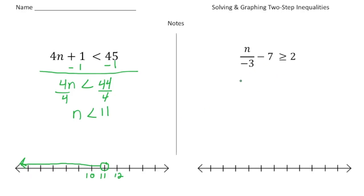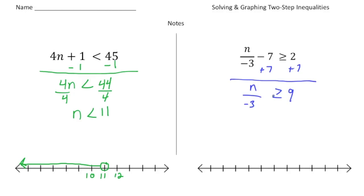Let's try the next one. We have a number divided by negative 3, minus 7, is greater than or equal to 2. For this one I'm going to first add 7 to both sides, and that results in n divided by negative 3 being greater than or equal to 9. Now I'm going to multiply both sides by negative 3, which gives us n is greater than or equal to negative 27.